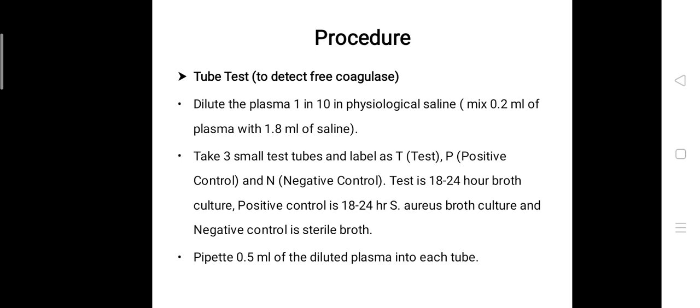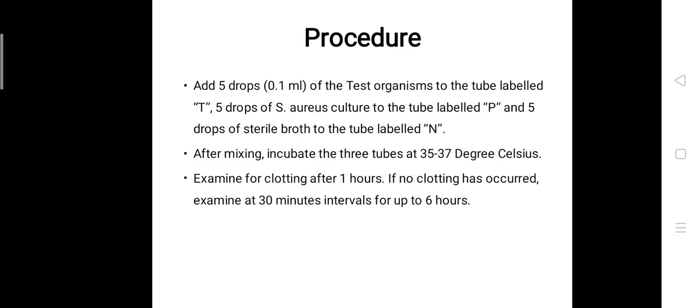Pipette 0.5 ml of the diluted plasma into each tube. Add five drops of the test organism to the tube labeled T, five drops of Staphylococcus aureus culture to the tube labeled P, and five drops of sterile broth to the tube labeled N.